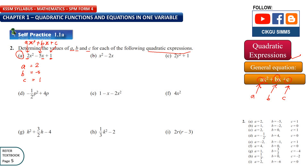Question 2b: x squared minus 2x. Your a is 1, and your b is negative 2. You don't have a constant, so your c is 0.